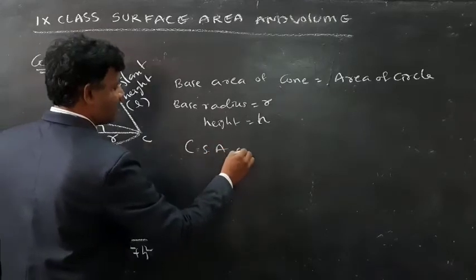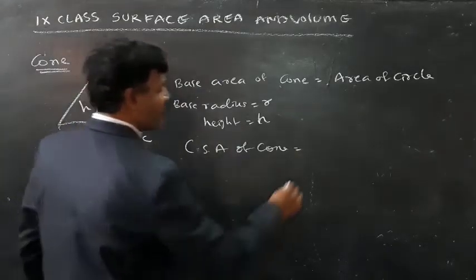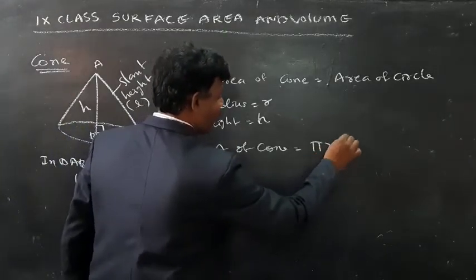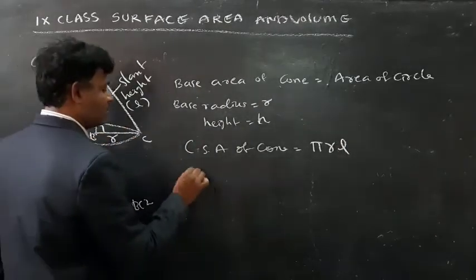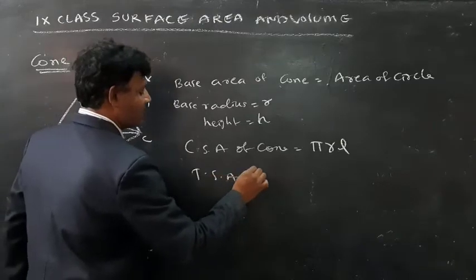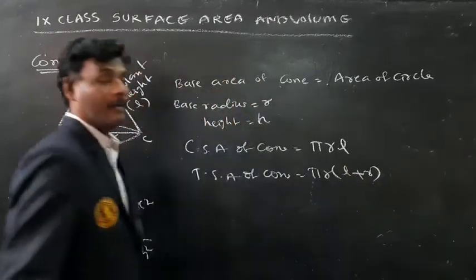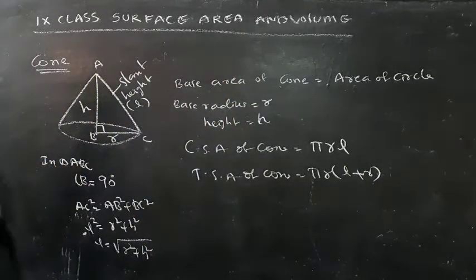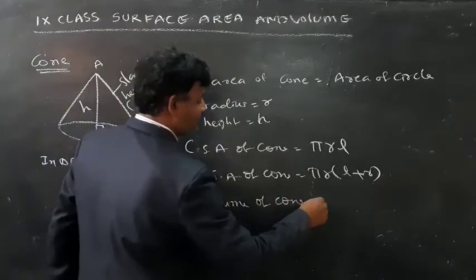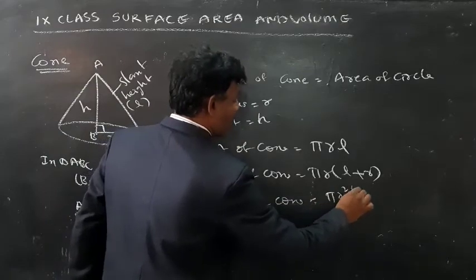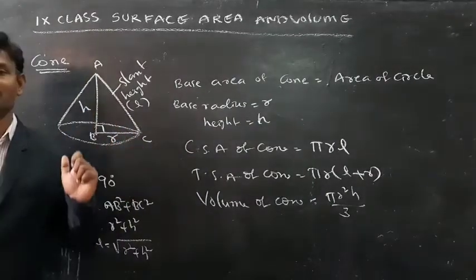Next, the curved surface area of a cone. The formula for curved surface area of a cone is πRL. Next, to find the total surface area of a cone, the formula is πR(L + R). Next, volume of a cone — the formula is πR²H by 3. So this is some important information about the cone.